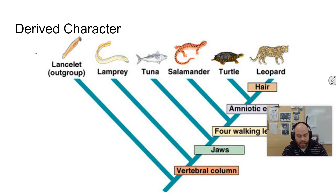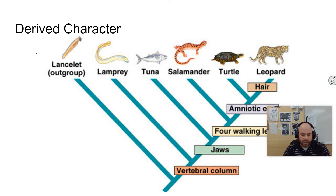The lancelet doesn't share any of the characteristics with the other organisms, which is why it's called the outgroup. The outgroup is commonly used as a basis of comparison so that you can compare it to the other things. Here's a picture of all vertebrates except for the lancelet, showing that it doesn't belong — it's almost like the control of an experiment. One of the terms concerning these different groups is a clade.